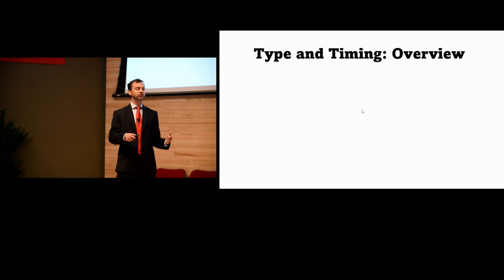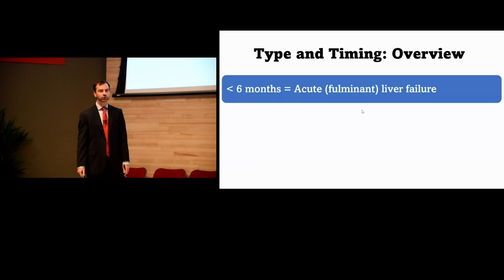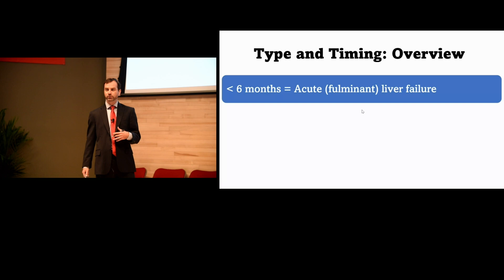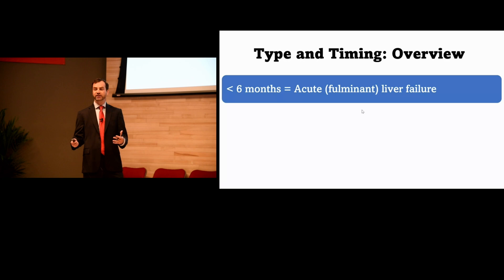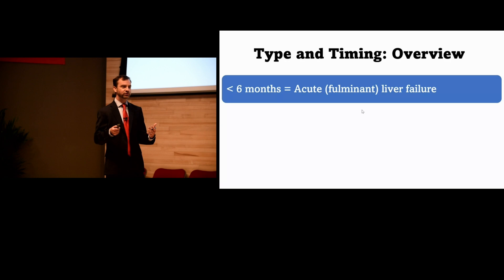Chronic patients don't tend to do very well, so I'm going to focus more on patients with a better potential prognosis — those with acute, often historically called fulminant, liver failure, where early management especially in the emergency department is key. Fulminant liver failure typically means their liver dysfunction is six months or newer. The key clinical finding is altered mental status, which differentiates acute liver injury from acute liver failure.